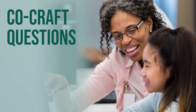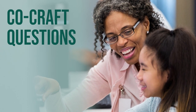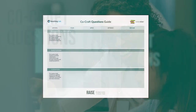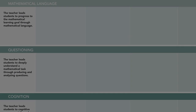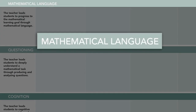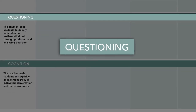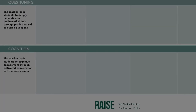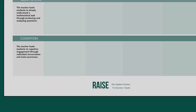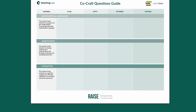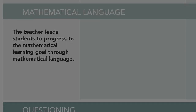So what does this routine entail? Think of CoCraft Questions as having three criteria: mathematical language, questioning, and cognition. When you apply all steps of the routine, you engage students in all three.